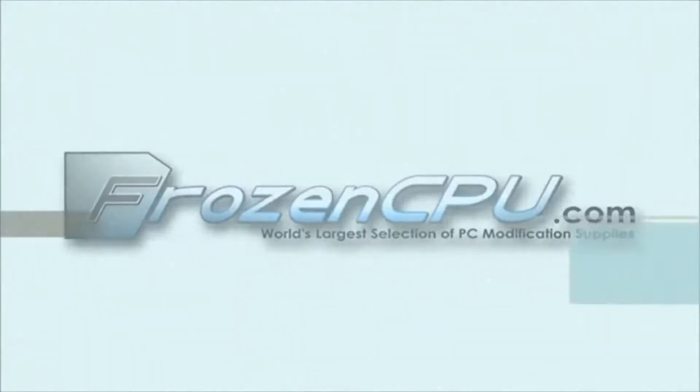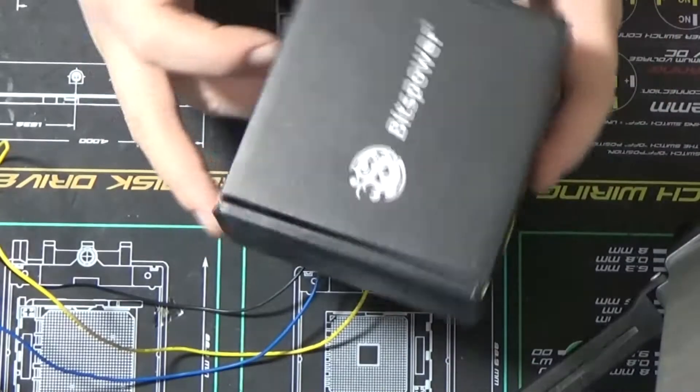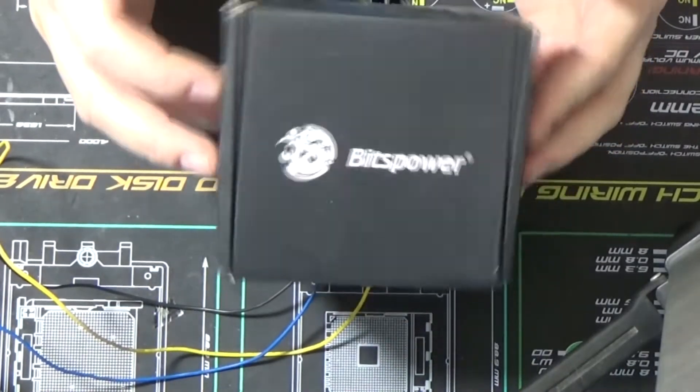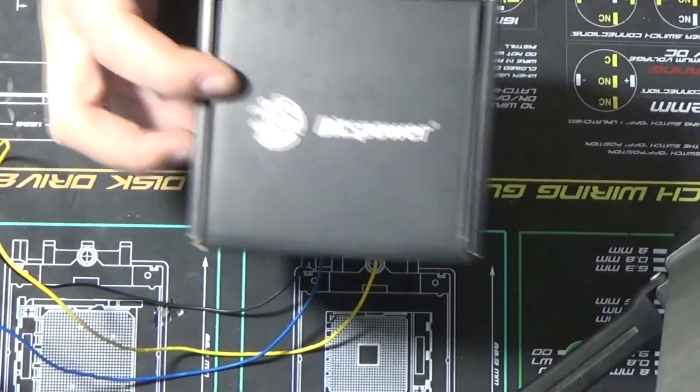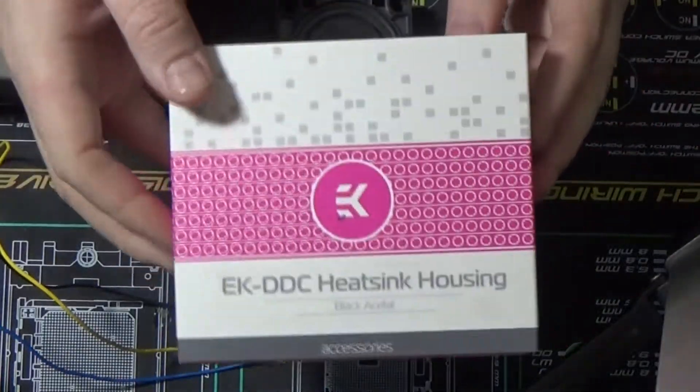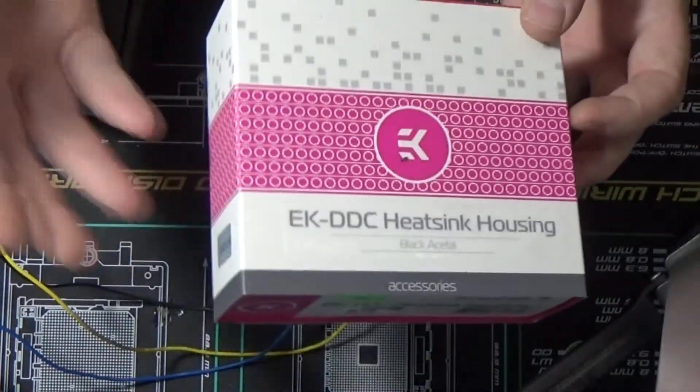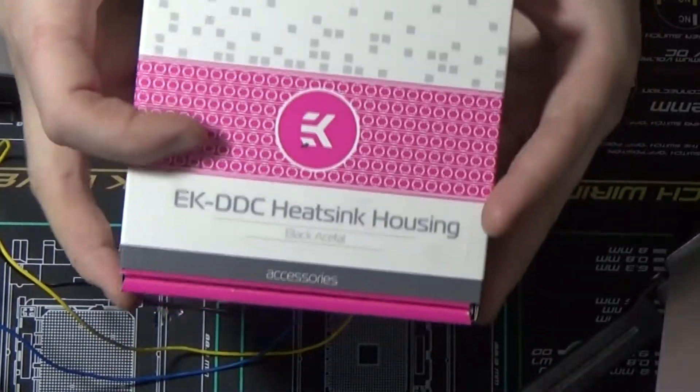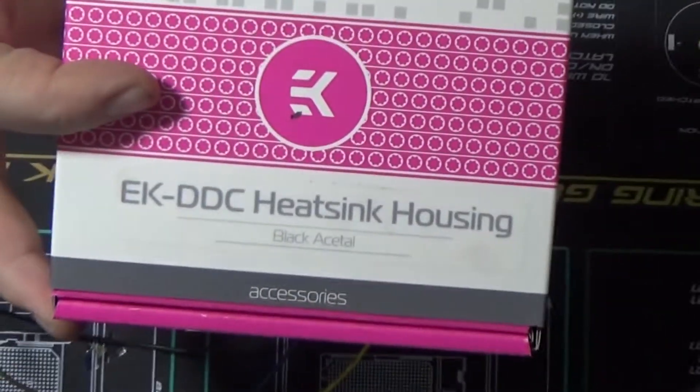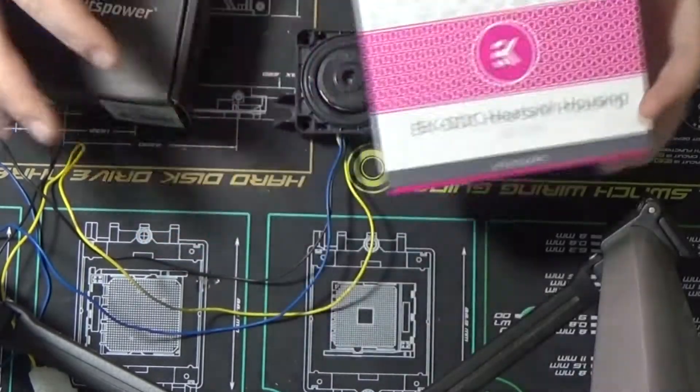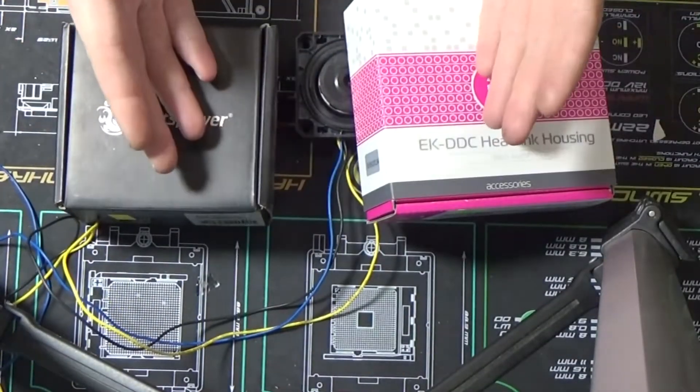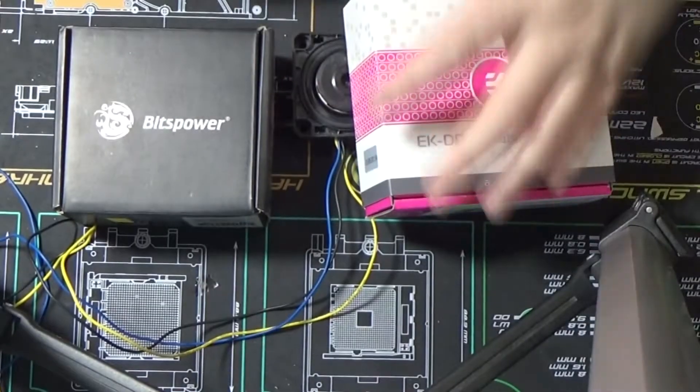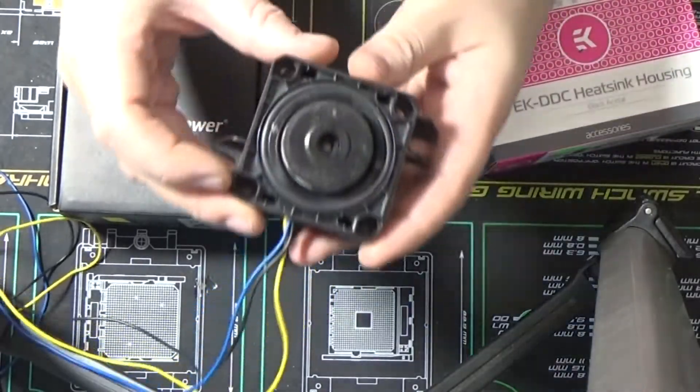All right, so the Bits Power of all the standard DDC heat sinks I've seen is by far one of the more involved to install. Installing the EK heat sink is very similar to that of the Alphacool and a couple other heat sinks on the market. One question I do hear a lot is, will all heat sinks line up with all pump tops? And the answer is yes, because the hole spacing is standard through all DDC pumps.